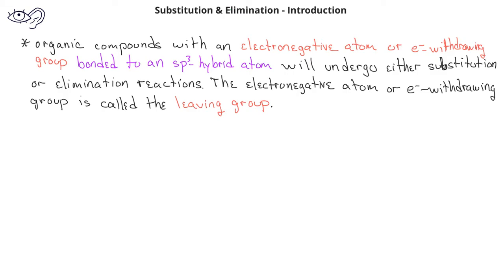We can represent these general types of reactions in the following way. We can have an alkyl group with a leaving group represented by the capital letter X reacting with a nucleophile represented by the capital letter Y with a negative charge. If these reactants undergo a substitution reaction, the nucleophile Y takes the place of leaving group X, and we get Y added to the alkyl group and X minus as the other product.